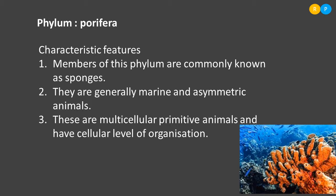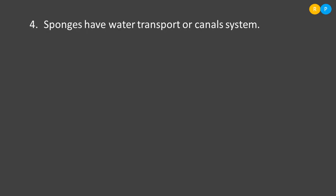Sponges have a water transport or canal system. Since sponges lack tissue, organs, and organ systems, all metabolic functions depend on the pores, which form a system in the body called the water transport or canal system. This system performs multiple functions in the organism — the entire metabolic activity depends on water transport.